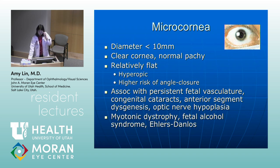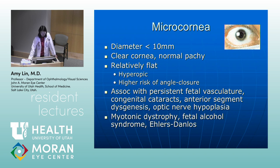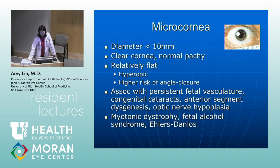Microcornea is a condition where the cornea is less than 10 millimeters, but it is clear with normal pachymetry. It is relatively flat, which gives people usually a hyperopic correction, and because it's relatively flat there may be a higher risk of angle closure with a more shallow anterior chamber. It's associated with other anomalies such as persistent fetal vasculature, congenital cataracts, anterior segment dysgenesis, and optic nerve hypoplasia. Conditions that can lead to microcornea include myotonic dystrophy, fetal alcohol syndrome, and Ehlers-Danlos.